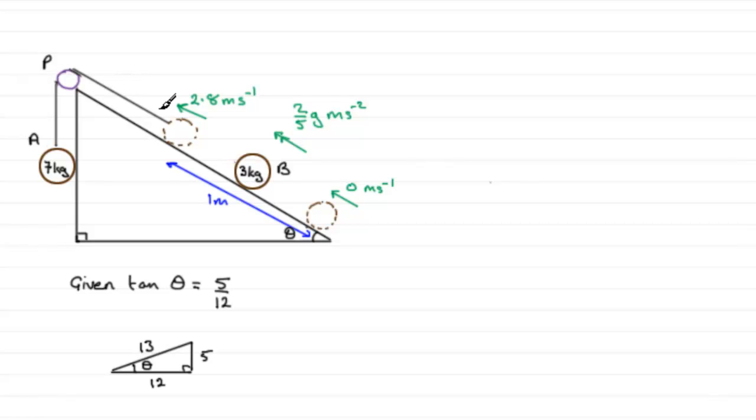So what I want to do is just add to this diagram. We found out in the previous part that after one meter, B is travelling at 2.8 meters per second. And now the string snaps and the particle then is just going to travel a little bit further up the plane without the string being attached. And when it gets to say this point here, it's moving with no speed at all. Just for an instant it stops before returning back down the plane.